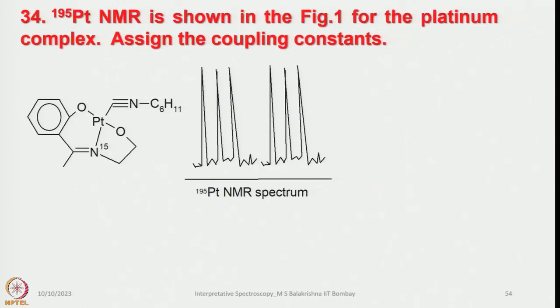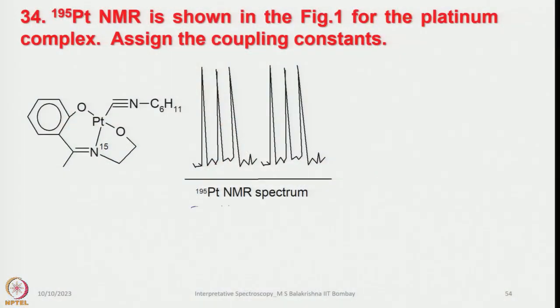Now let us look into another example which I think I already discussed while looking into NMR problems. Let me recall again and explain 195Pt NMR — how to understand and interpret it. The spectrum is already given along with the structure; you have to interpret and explain why two doublets of equal intensity are observed. One 15N is designated, so for 15N, I = 1/2.